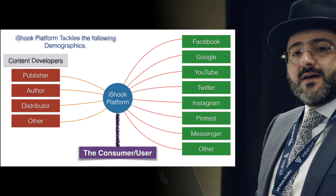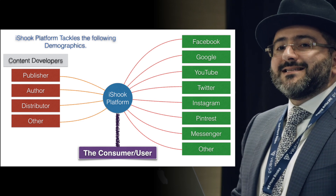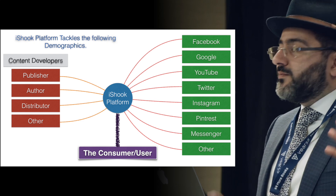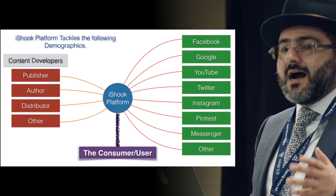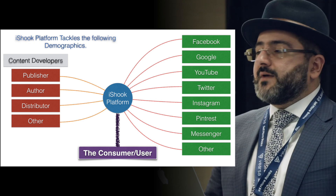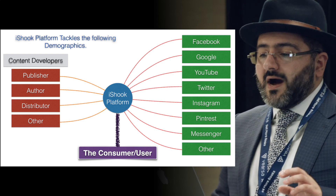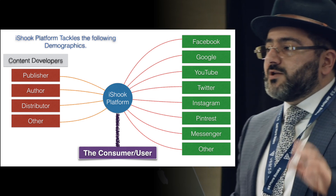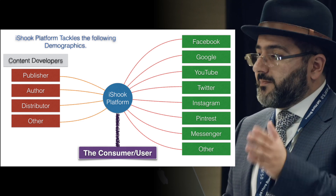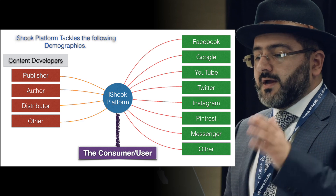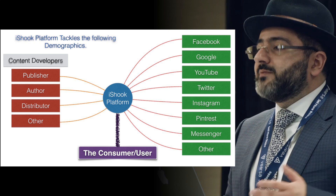But in every aspect — Facebook, Google, and YouTube — you're never going to find a concise and condensed platform that puts one traffic of content for authors and writers. That's where iShook comes in. iShook integrates these social media means into its platform. iShook.com is the centralized system where we're able to connect through social media for publishers, authors, distributors, and others. Publishers, authors, and distributors can submit their work through the iShook platform.